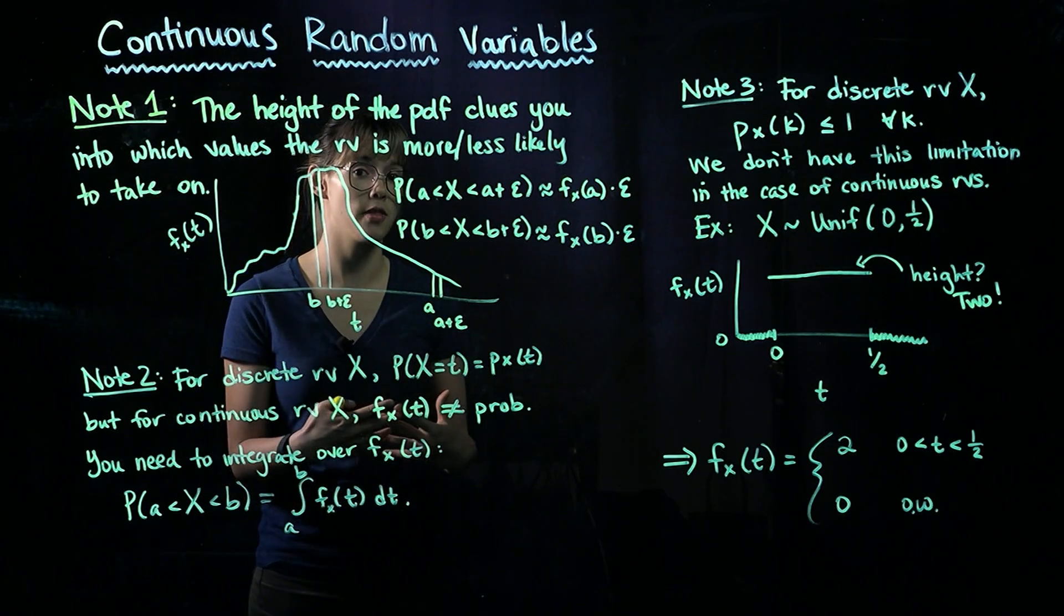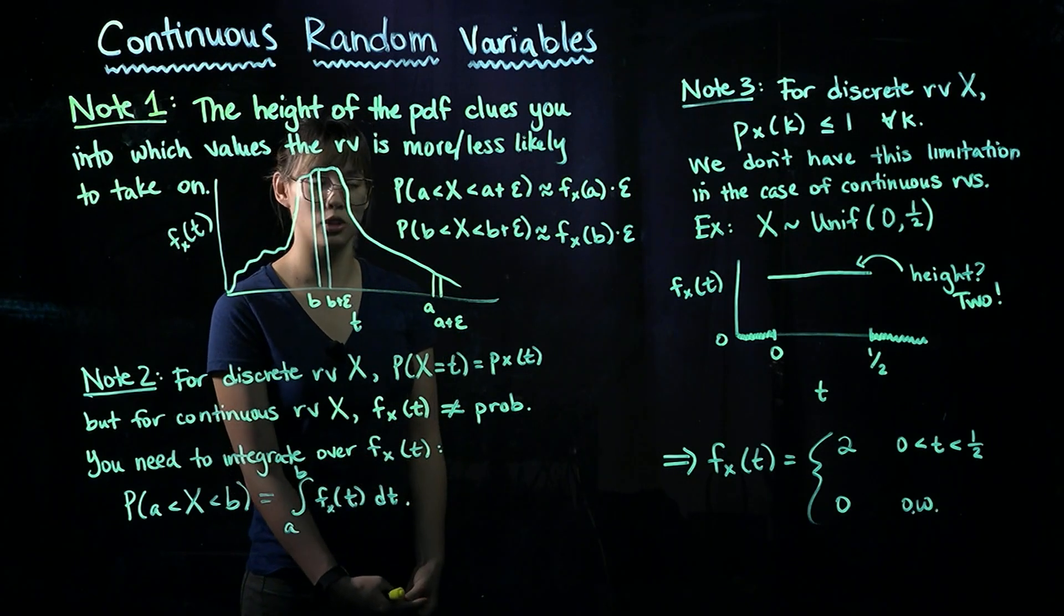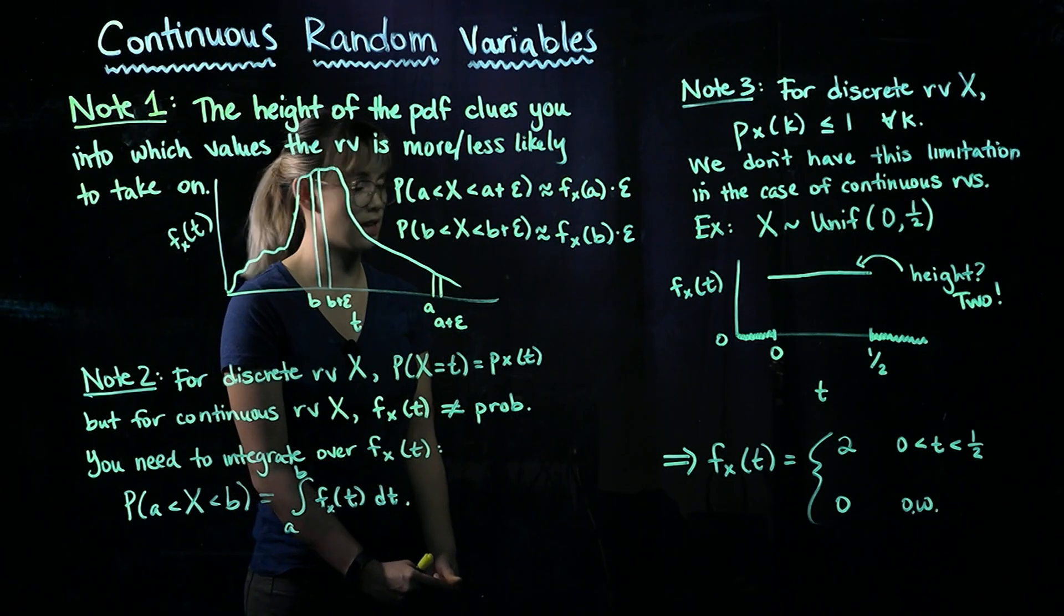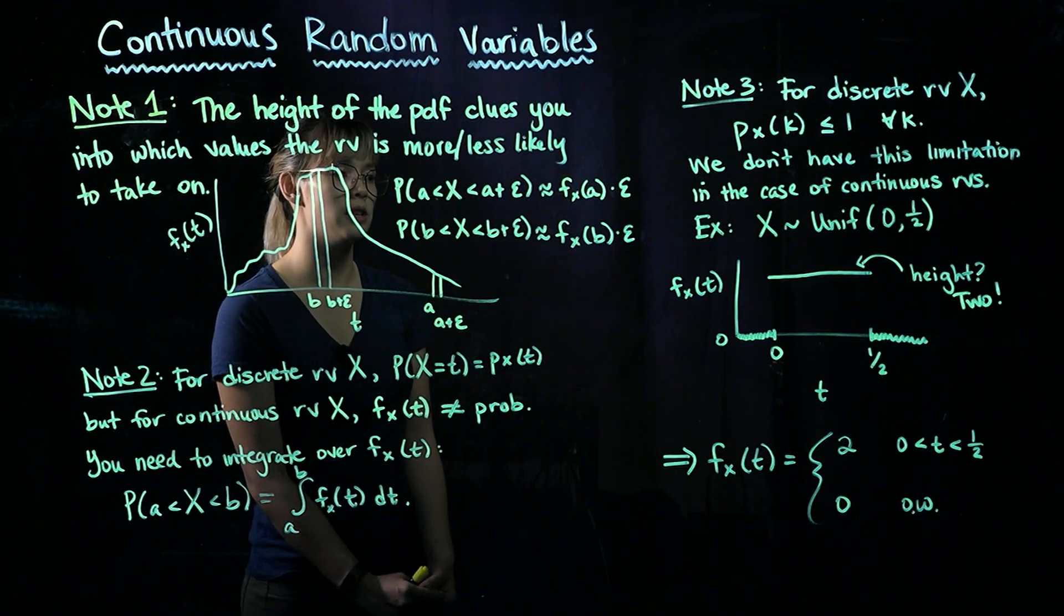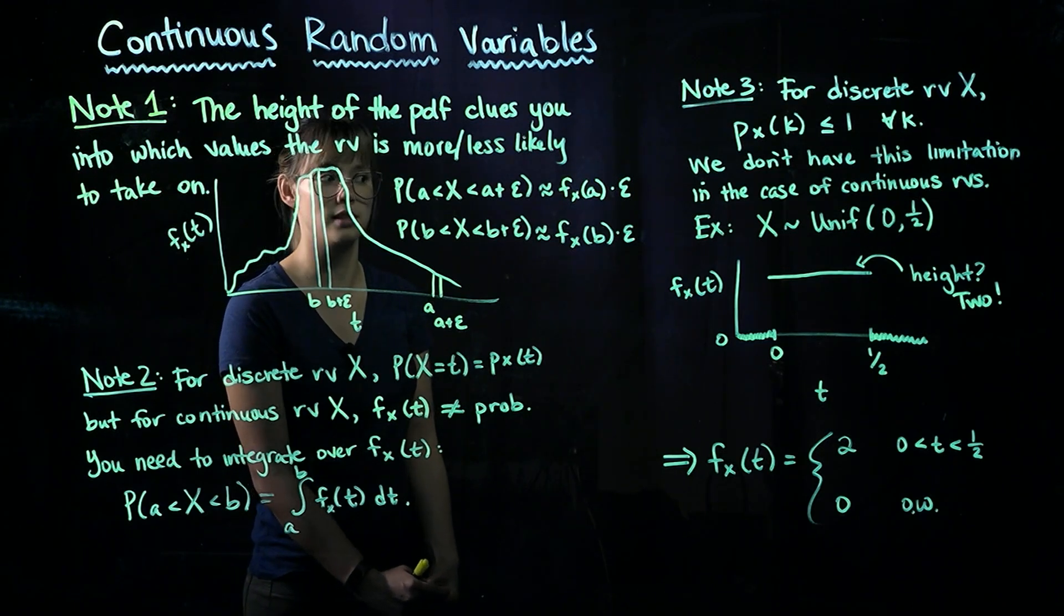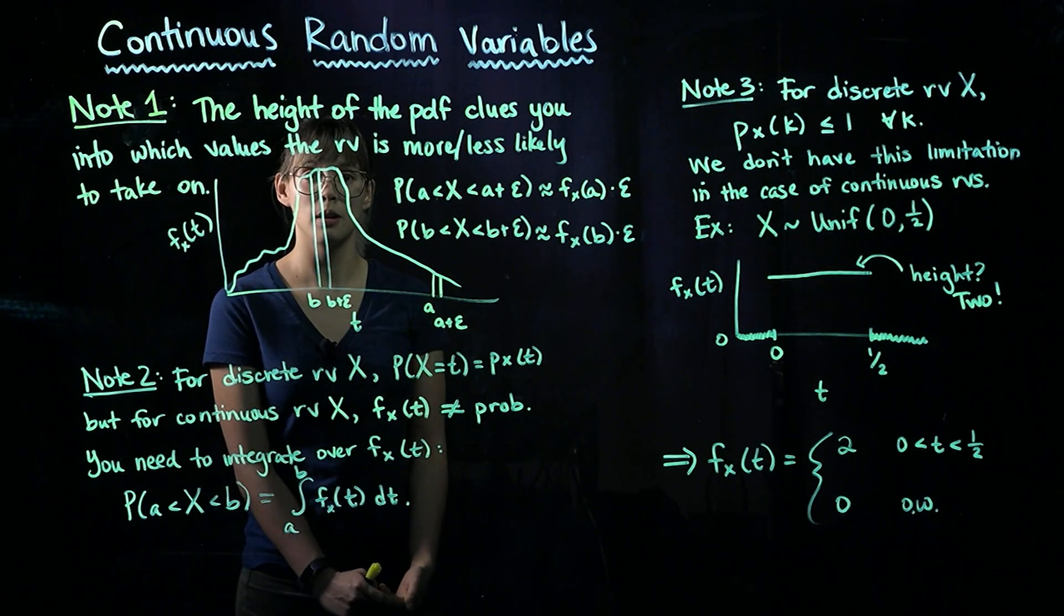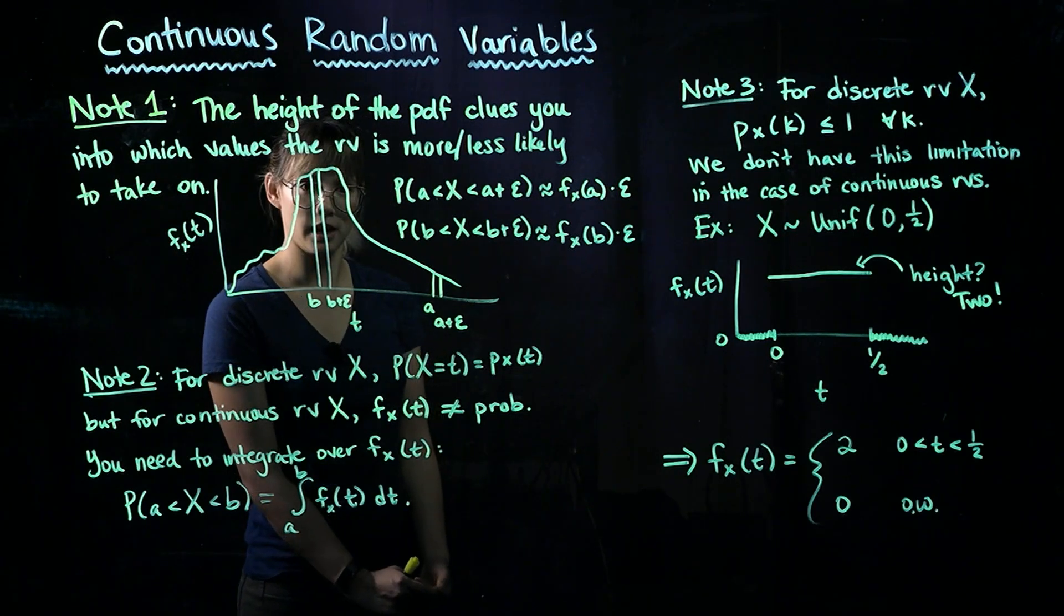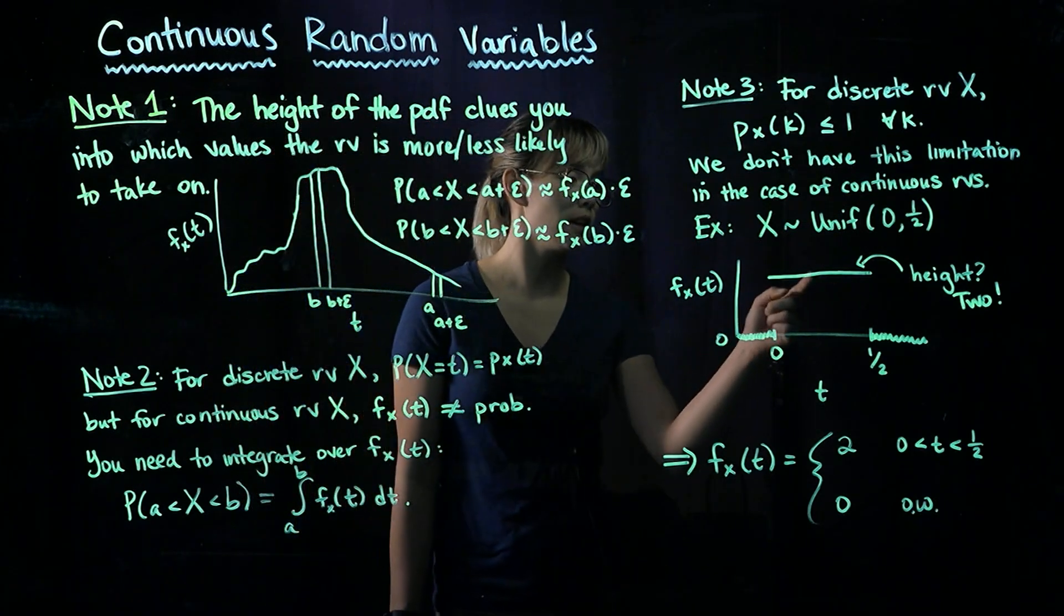Do we have this limitation in the continuous case? Definitely not. So one example, just to prove that this limitation does not exist, is if we have a uniform distribution uniformly distributed between 0 and 1/2. So we saw the uniform distribution before over a different interval. Now we're looking at the interval 0 to 1/2.